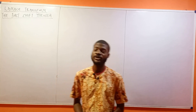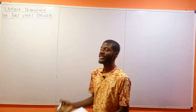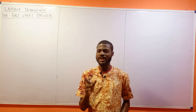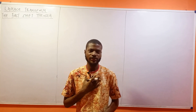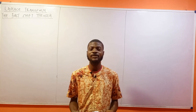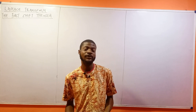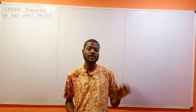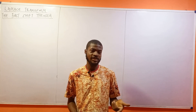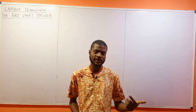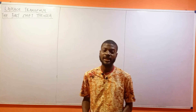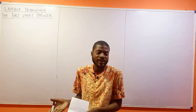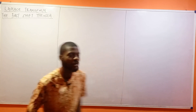So for today, I'll be treating the first shift theorem. Jokingly and at my own discretion, I actually call this the 'multiplying by exponential minus at' theorem. We know we'll have multiplying by t and t^n, then we'll have dividing by t. So many times, I actually love calling this the multiplication by exponential to the power of minus at theorem. Now, what does it say?